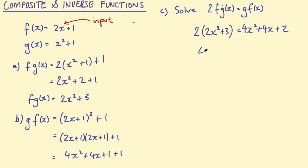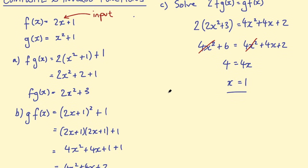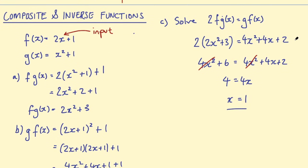Now I have my equation and I can solve for x. Expanding: 4x squared plus 6 equals 4x squared plus 4x plus 2. We have 4x squared on both sides, so subtract them — they cancel out. Then subtract 2 from the left-hand side, giving 4 equals 4x. Divide by 4, and we get x equals 1. If you want to check that, substitute it back into the original equation and you'll find that's correct.